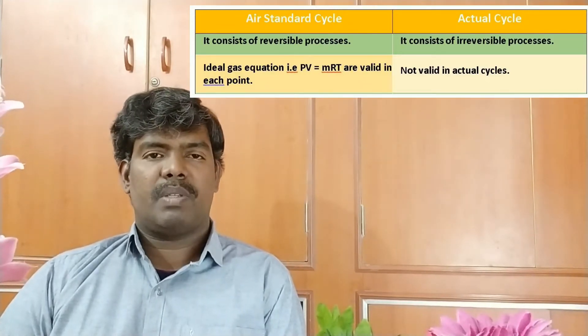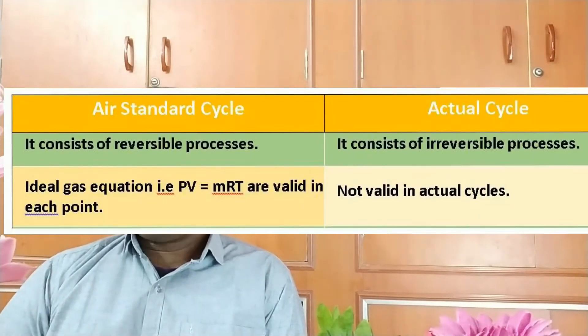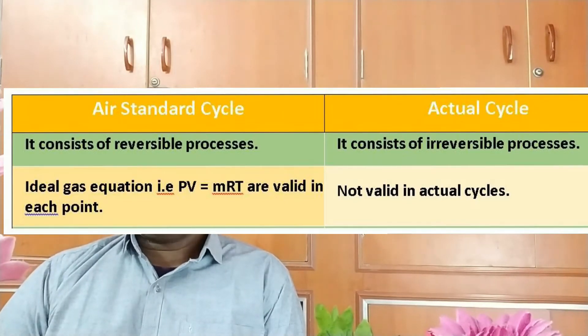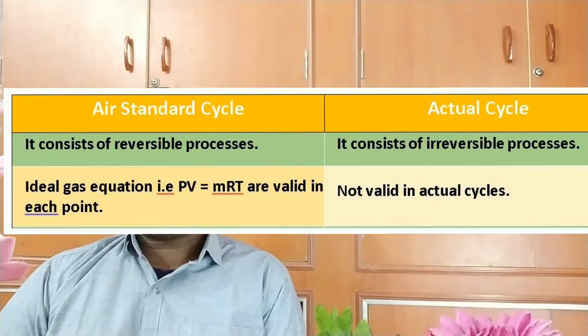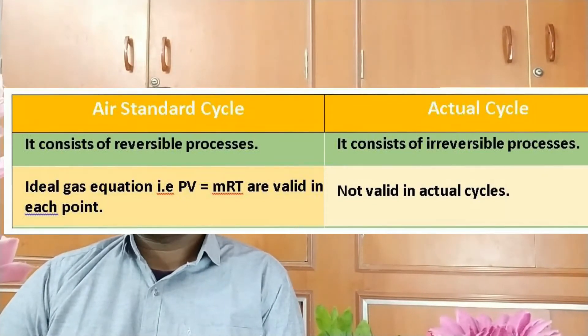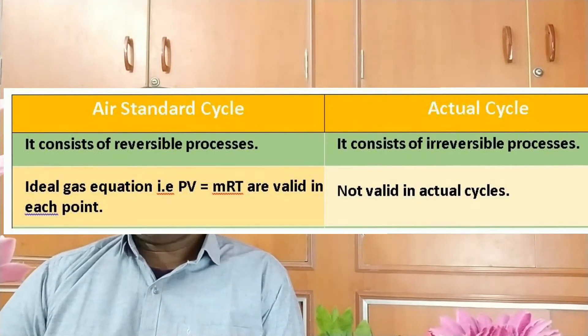The fifth difference is closely related to the fourth: in a standard cycle, the ideal gas equation PV = mRT is valid at each and every point. But in an actual cycle, the ideal gas equation is not valid, because the equation holds only for reversible processes where conditions repeat each cycle.